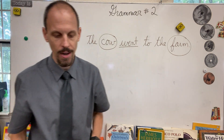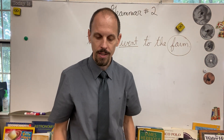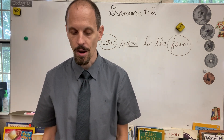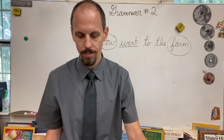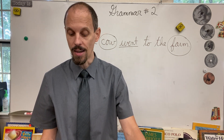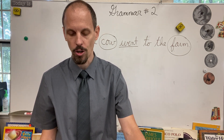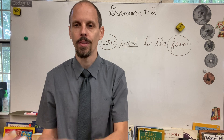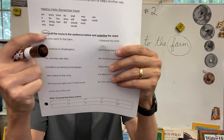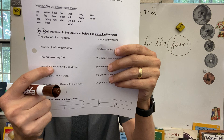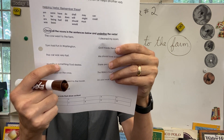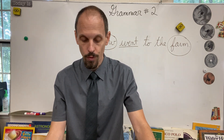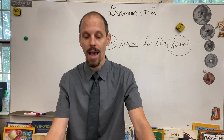Now look down three sentences where it says 'Humility is something God desires.' Does anything in there show action? 'Desires' could be, but it's not used as an action in this sentence. Notice the word 'is' — look up at the top at your helping verbs. 'Is' is on that list, so in this sentence we would underline 'is.' In all these sentences, circle your nouns and underline your verbs. A verb is a word that shows action.